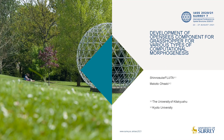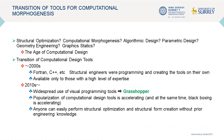Hello everyone. Today I'd like to introduce structural design tool development and some examples of computational morphogenesis or parametric design using developed tools. Structure optimization, computational morphogenesis, algorithmic design — as these words symbolize, the architectural industry has entered the era of computational design.